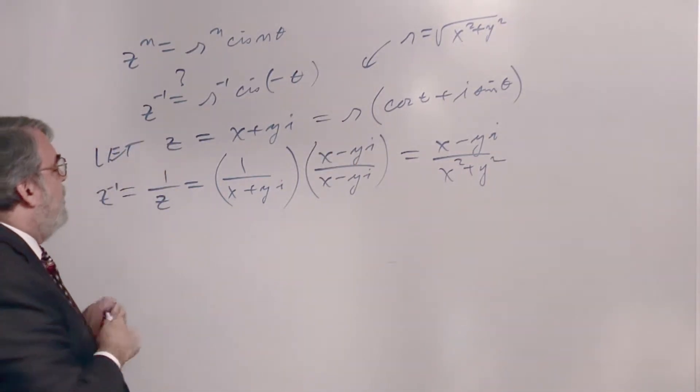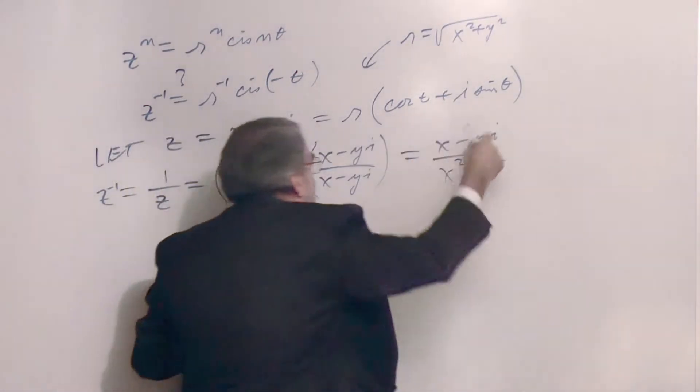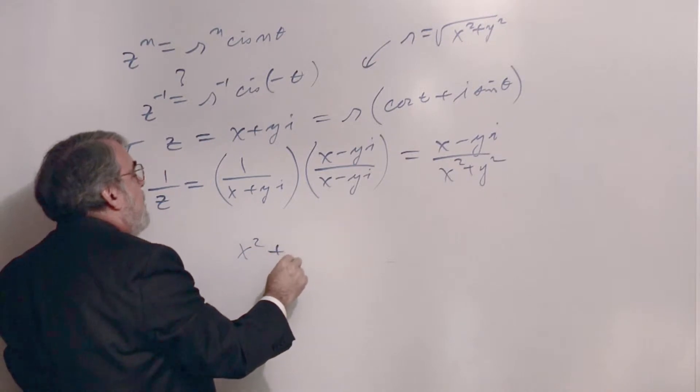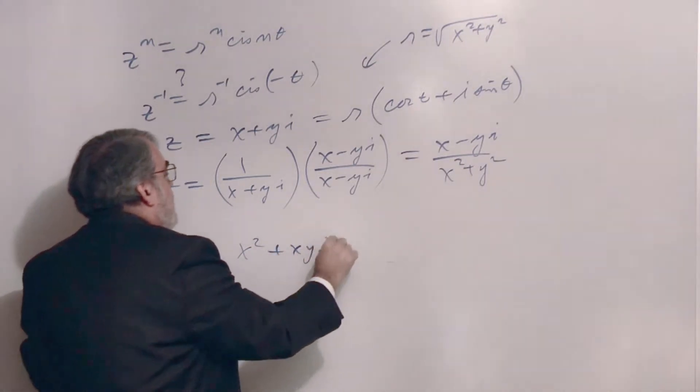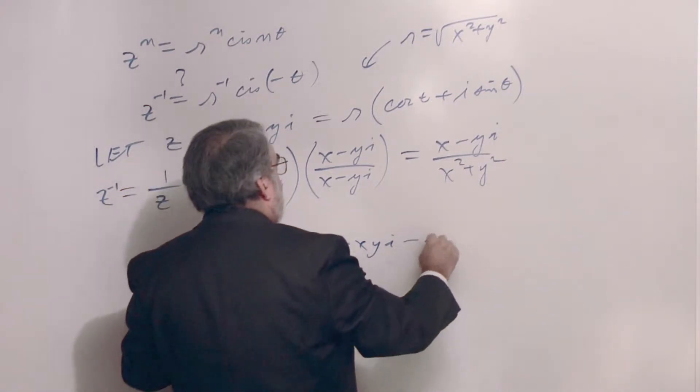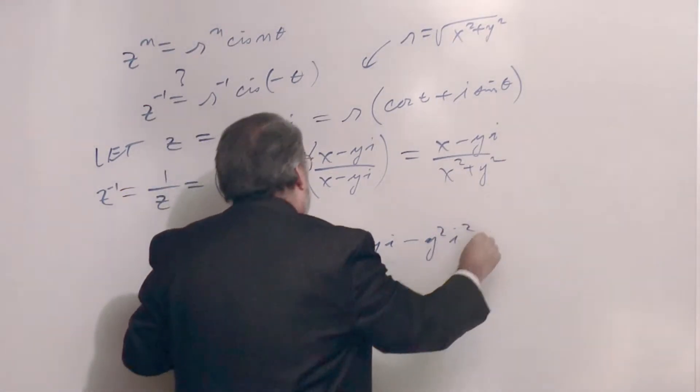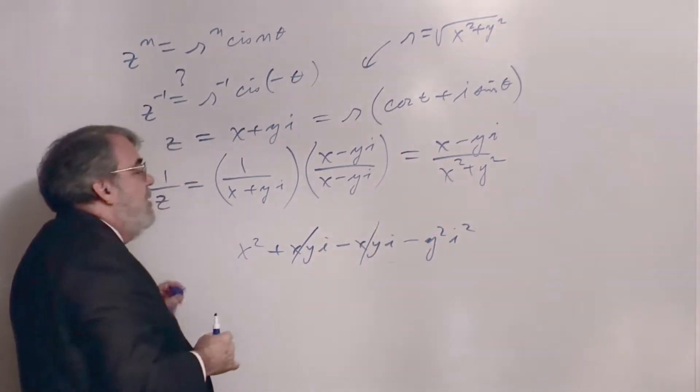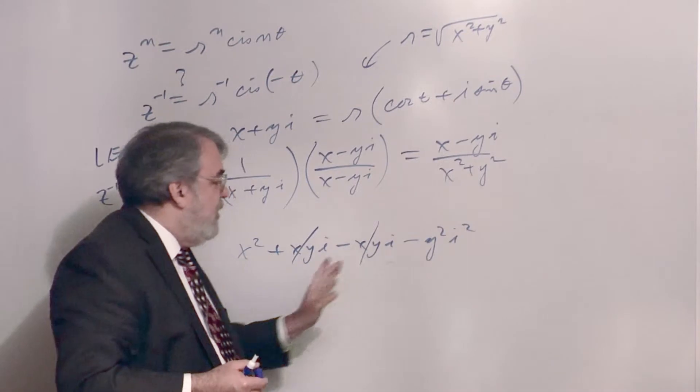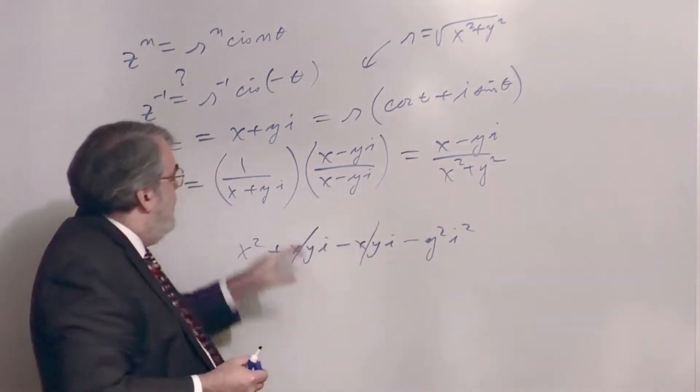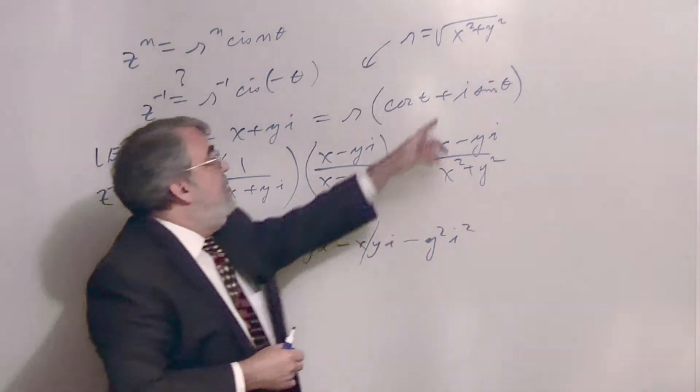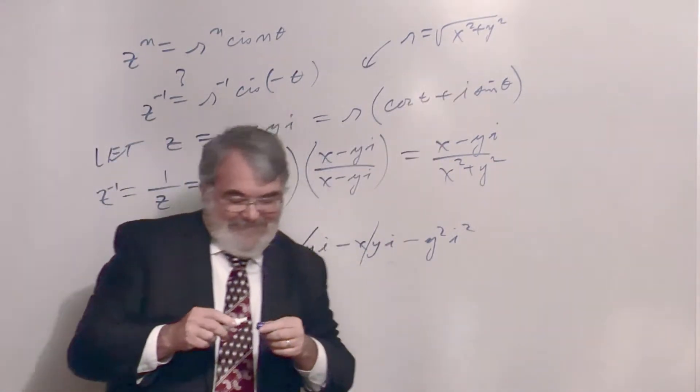We multiply that out. The numerator is x minus yi. If you follow this out, you'll see you'll get x squared plus xyi minus xyi, and then minus y squared i squared. Those terms cancel. And i squared is negative 1. So, this changes this to x squared plus y squared. So, this multiplication is x squared plus y squared. Which, conveniently, is r squared, isn't it?